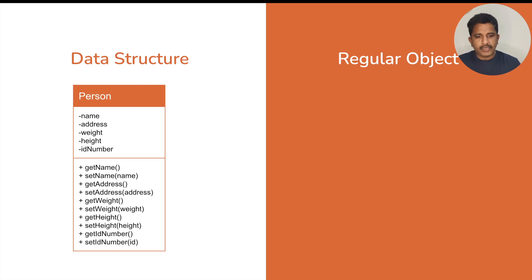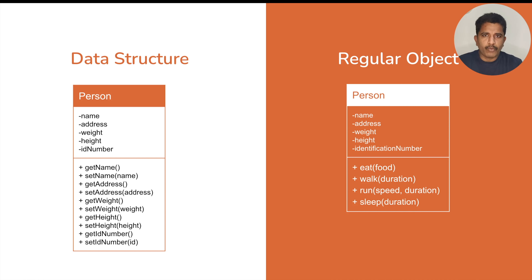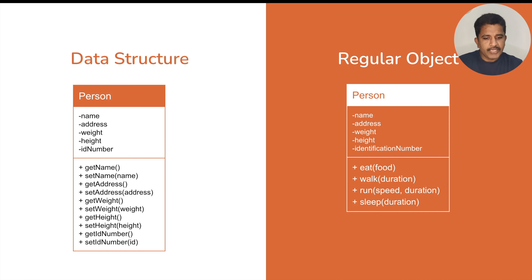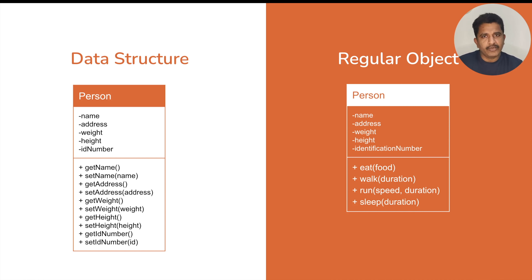If you see the same object as a regular object where we have some business logic — not just a model class — we have the same private variables, but we don't have getters and setters. Instead we have proper behavioral methods that describe what exactly they are doing, and internally they can make changes to the state. For example, whenever the 'eat food' method is executed, certain variables get affected: weight might change slightly, but name, address, height, and ID number will not change immediately. Every behavior has a certain impact on some states — this is how we expose methods to the outside world, without revealing internal variable names or data types.